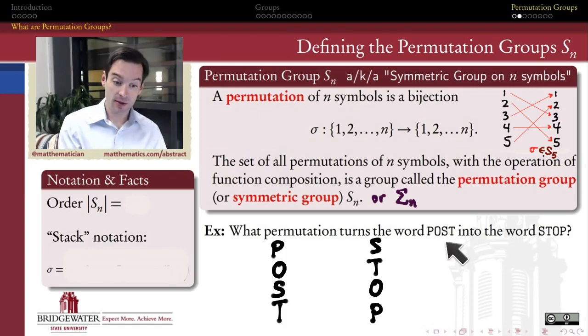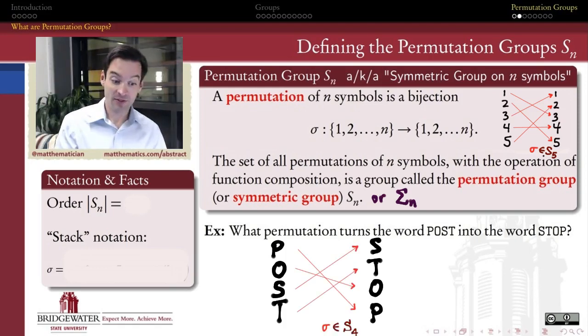It's clear that the letters in these words are related by a bijective function. If I diagram it out, this is what that function would look like. We can think of it as an element of S_4, the symmetric group on four symbols.